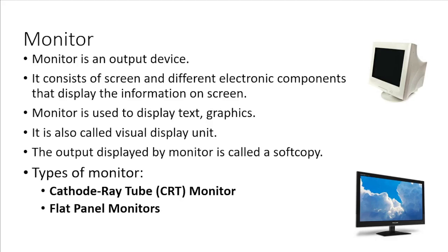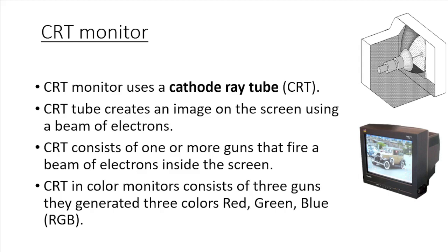Different types of monitors are cathode ray tube monitors and flat panel monitors. CRT monitors use a cathode ray tube. The CRT tube creates an image on the screen using a beam of electrons. CRT consists of one or more guns that fire a beam of electrons inside the screen. CRT in color monitors consists of three guns, and these guns generate red, green and blue — or RGB — colors. The other colors are generated with a combination of these three colors.